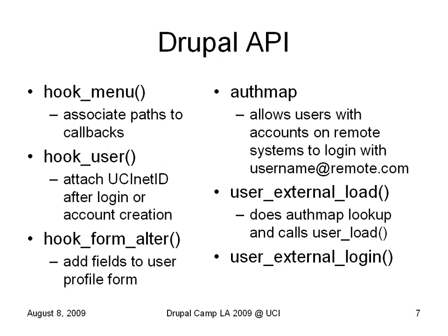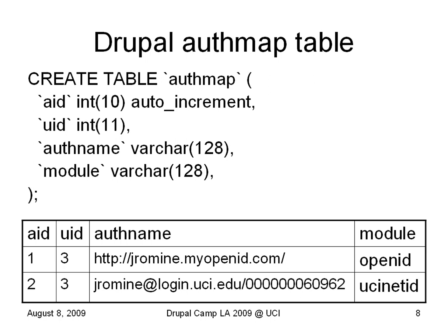So what is authmap? Authmap was in Drupal 5, maybe earlier. It was what allowed you to log in to one Drupal site with your Drupal account on another site. The authmap table has three fields: your user ID, an auth name string, and a module string. The auth name string probably looks something like username@remote.host.com, and the module was probably 'drupal'. I built my UCI NetID module off of several modules I looked at, but principally the OpenID module. OpenID does use this authmap table, so you can see my OpenID entry in there.